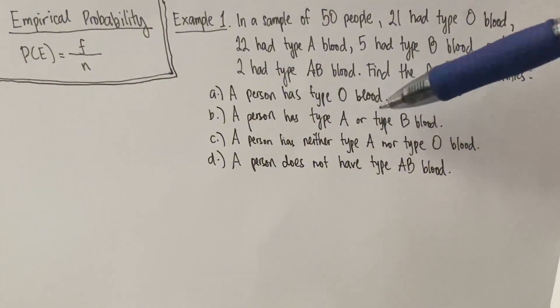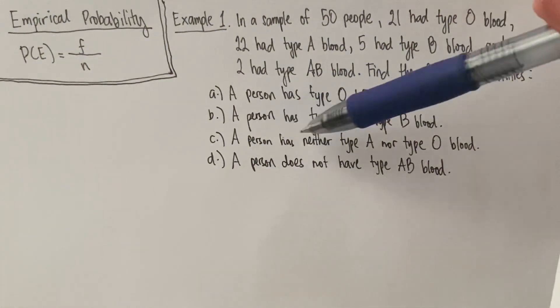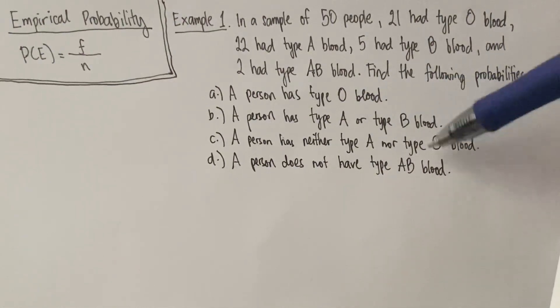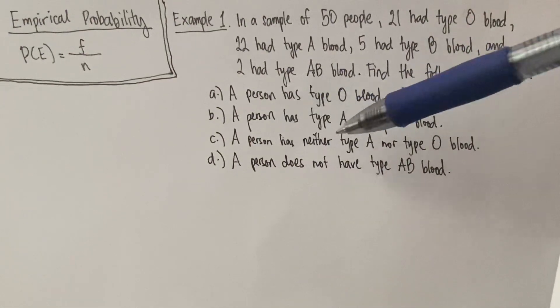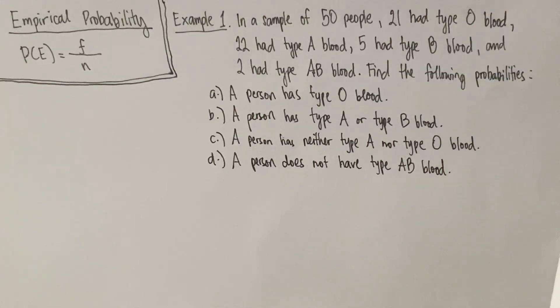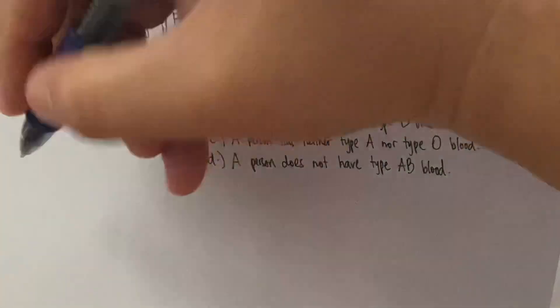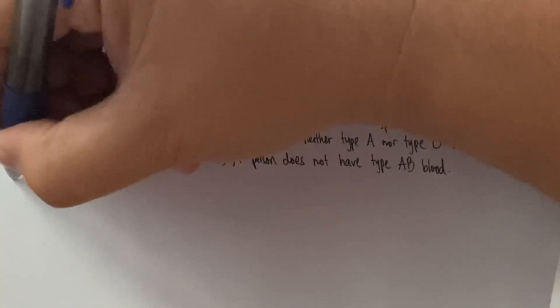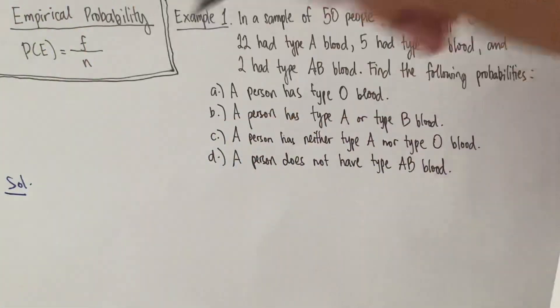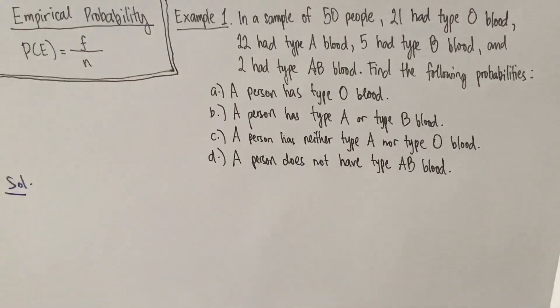Find the probabilities of the following: (a) a person has type O blood; (b) a person has type A or type B blood; (c) a person has neither type A nor type O blood; and (d) a person does not have type AB blood. Let's start with the solutions.